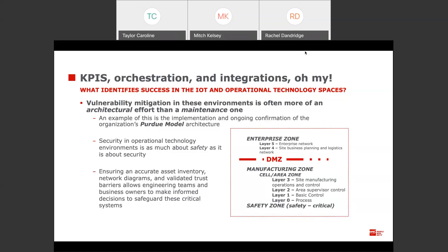All of this is powered by understanding an accurate inventory of the assets in your environment, as well as the network diagram to ensure assets are segregated. Those trust barriers need to exist and be properly configured so machines that aren't supposed to talk to each other don't have that ability, and protocols are mapped so that only certain ports and services are allowed to communicate.